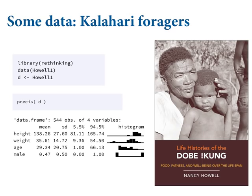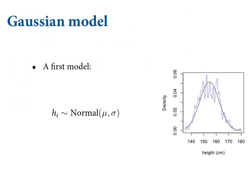Let's do the world's simplest linear regression. I used height as an example before — it's a nice Gaussian variable. These height data come from Nancy Howell's classic evolutionary demography book on the !Kung, built into the rethinking package. It's a minimal dataset with just height, weight, age, and an indicator of whether the individual is male. This is 544 individuals. We're going to focus just on height for the moment — just the adult heights — and think about how we would build a model to describe the Gaussian distribution of these heights.